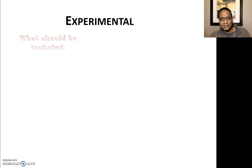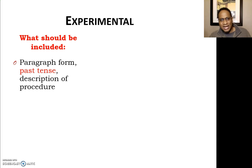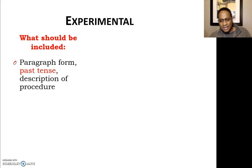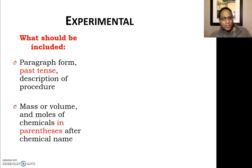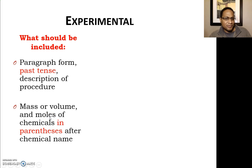Now let's look at the experimental. Your experimental should have a nice paragraph format written in the past tense. You're describing what was done, so avoid words like I or we. Write it so that someone can look at your work and repeat the experiment. Ensure you include the mass, volumes, or moles of chemicals used in parentheses after the chemical names.